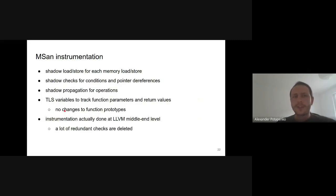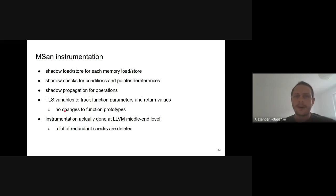Using MSan adds a lot of instrumentation code. For every memory load and store, the corresponding shadow values are also read and written to shadow memory. For conditions and pointer references, shadow checks are inserted. For arithmetic operations, instrumentation code calculates the shadow for operation results. For function parameters, their shadow is stored in special thread-local variables — this keeps function prototypes intact so instrumented functions may be called by non-instrumented ones. All instrumentation is done at the LLVM intermediate representation level, so many redundant checks are killed later in the optimization pipeline.